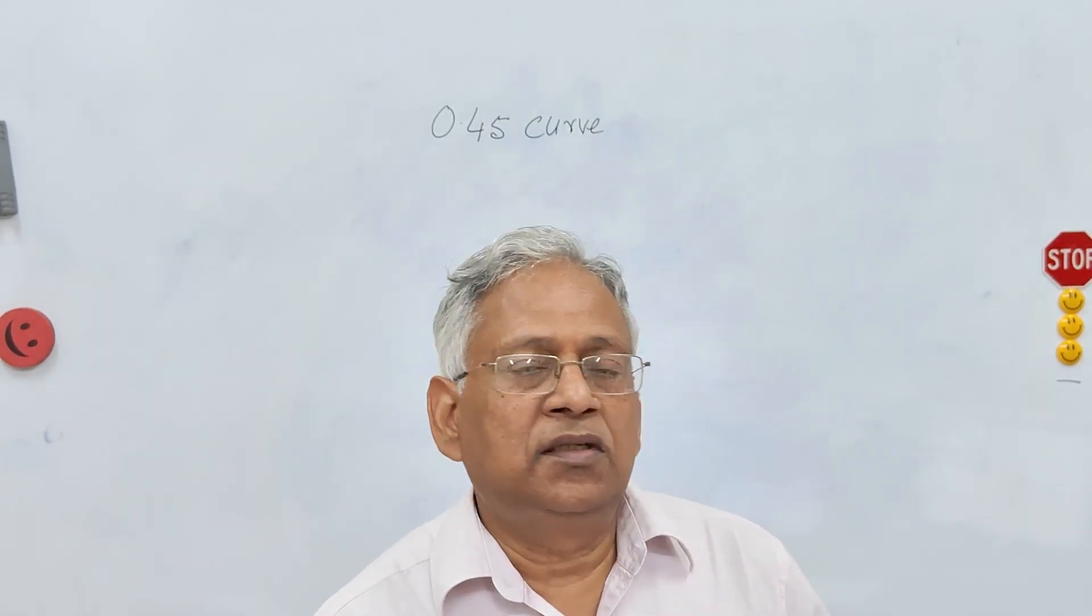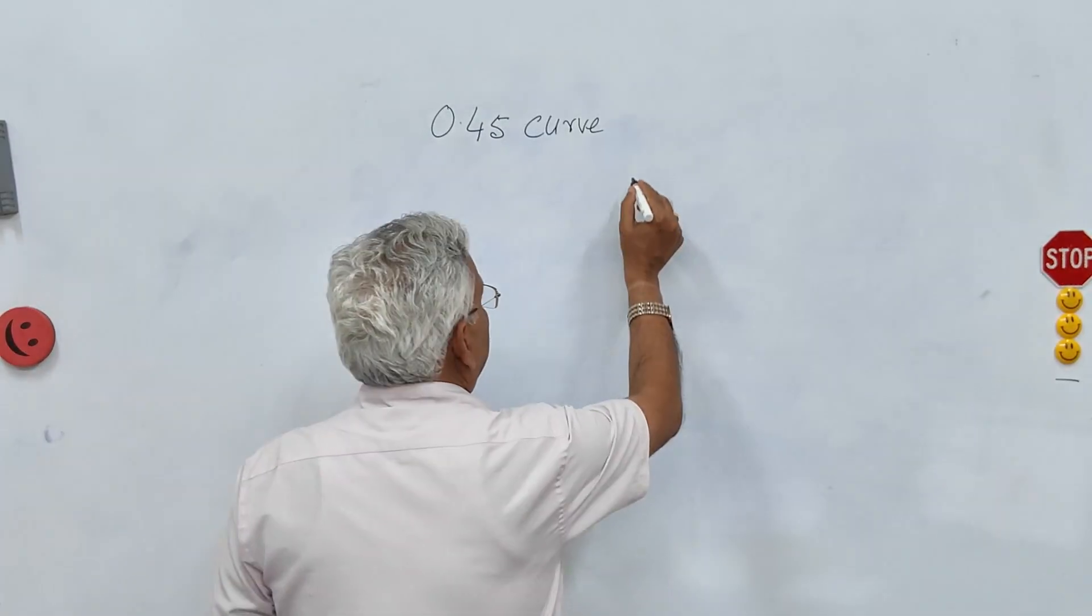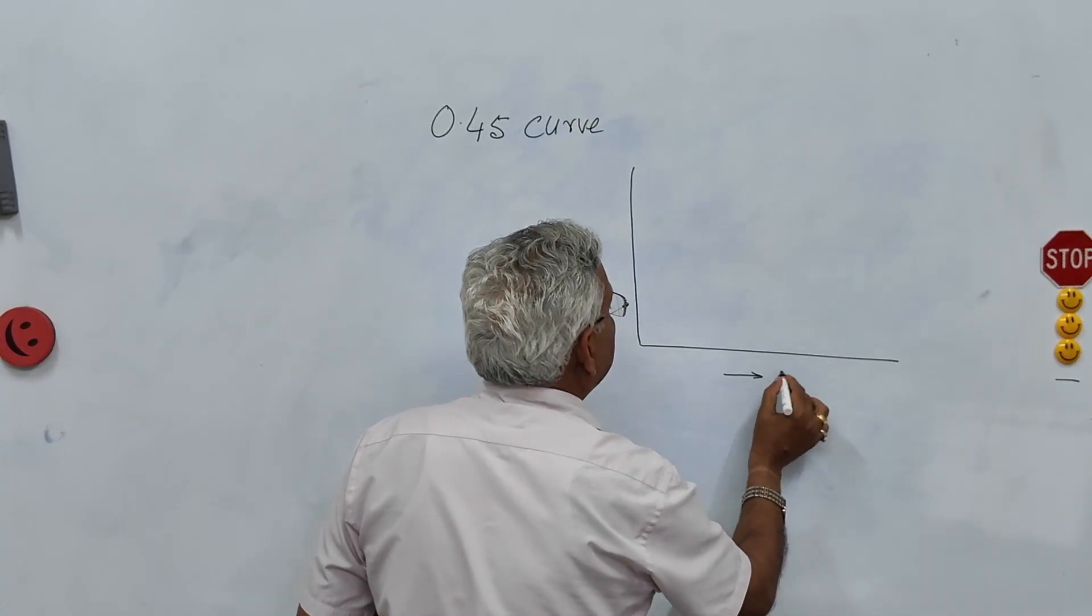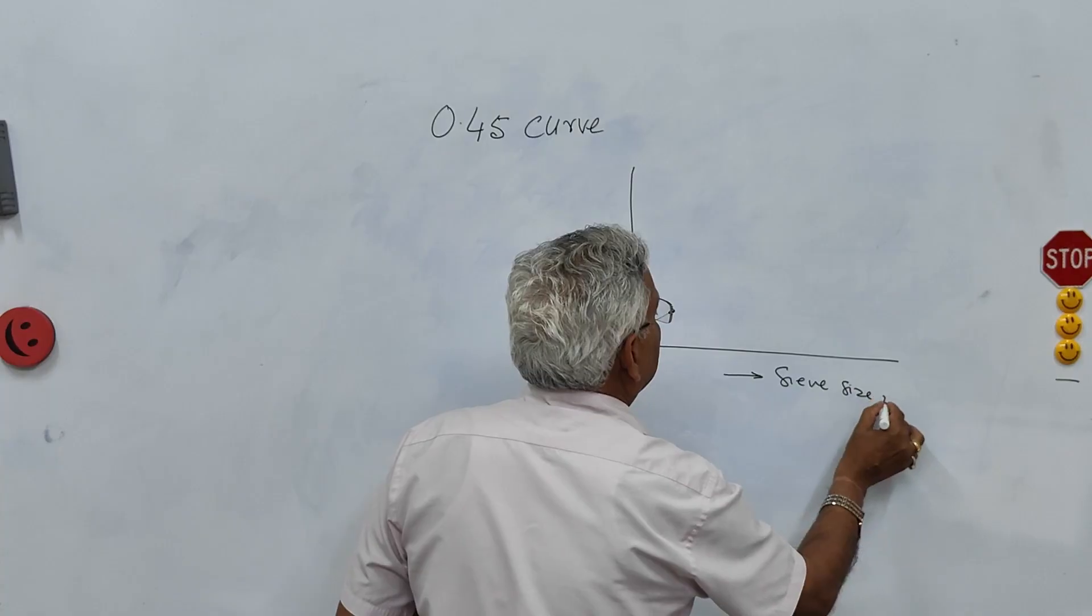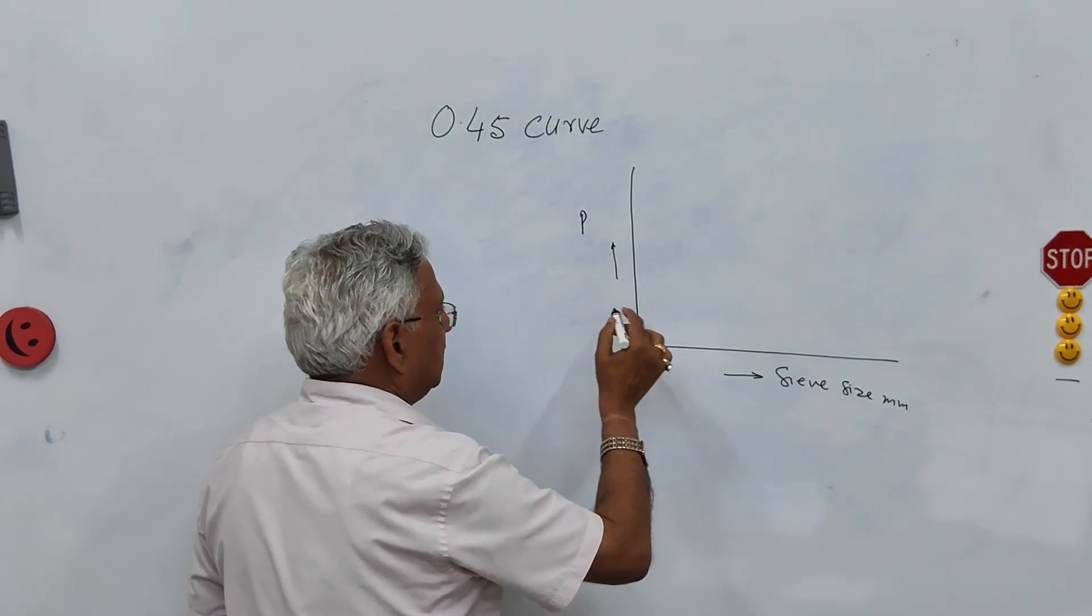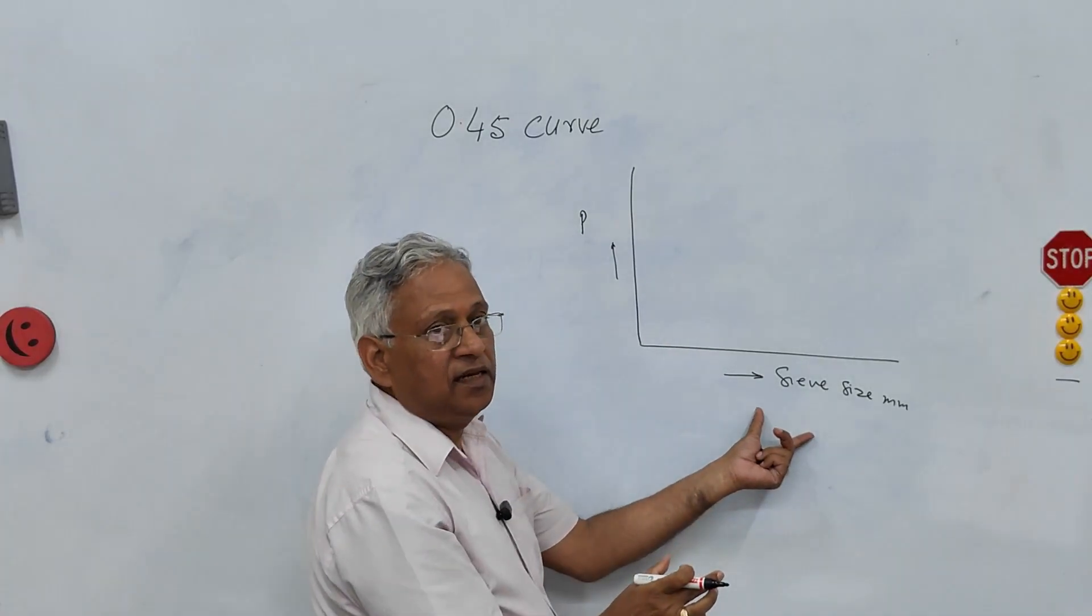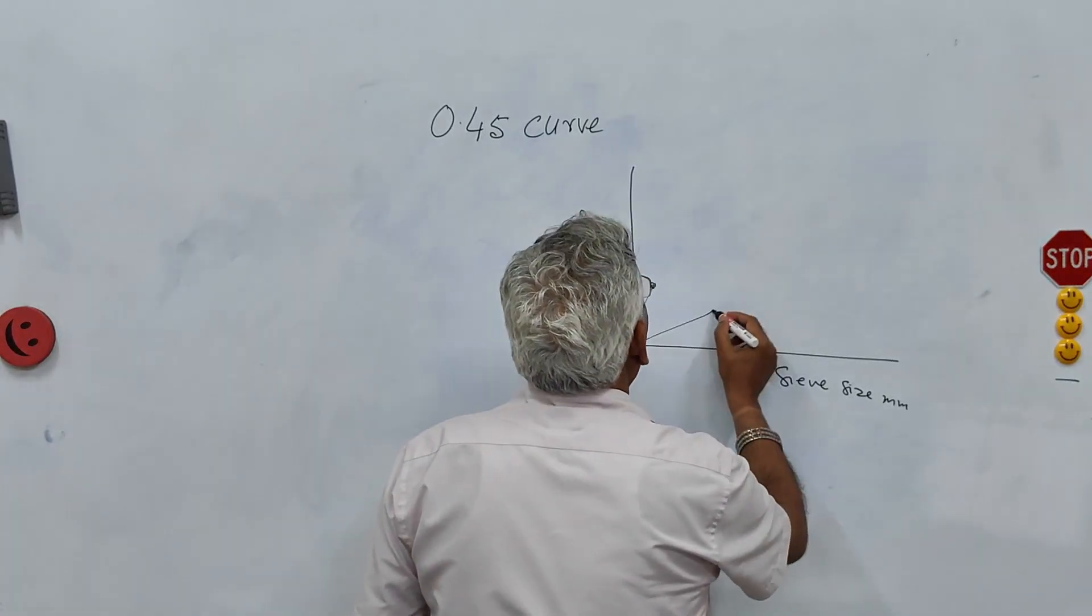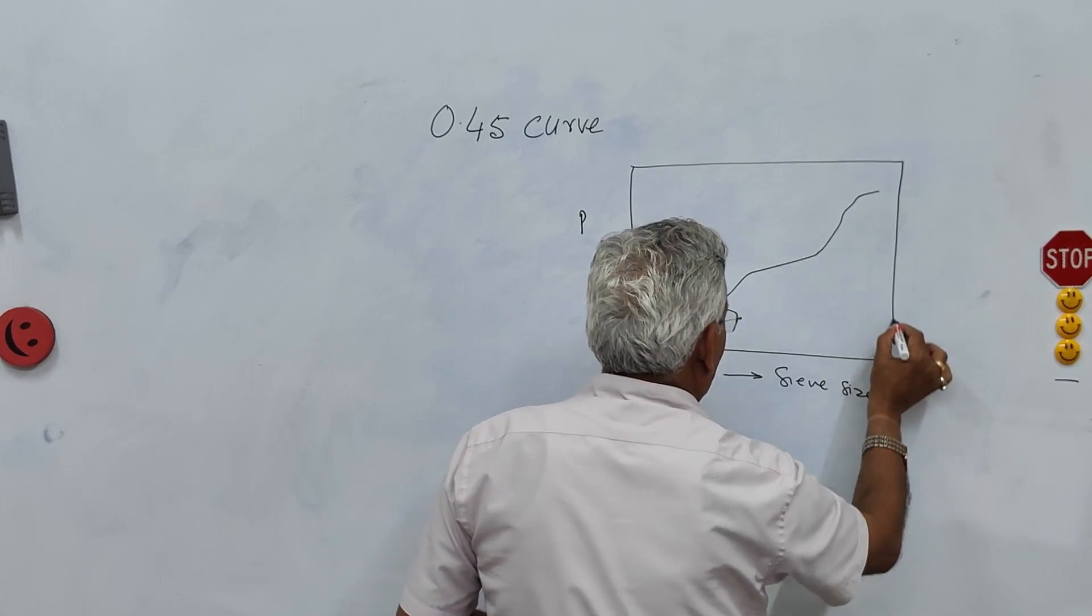When you plot this weight size distribution of aggregate, on x-axis you take sieve size in millimeter and on y-axis you take percent passing. This is normally a log scale, this is a normal scale, then you get a grading like this depending upon which mix you are dealing with.